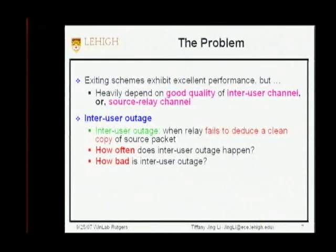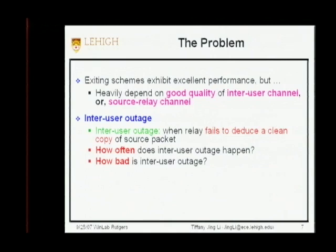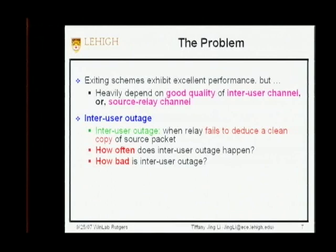One thing we observed is that a lot of existing schemes in literature make the assumption that there is very good quality between the source and the relay — the prevailing assumption being that when the source broadcasts, the relay almost always gets a clean copy of the data. However, this assumption may not be entirely true. We define inter-user outage as the case when the relay fails to decode a clean copy of the source packet even after protecting the package using channel coding. The question is: how often does this happen, and how bad is it when it happens?